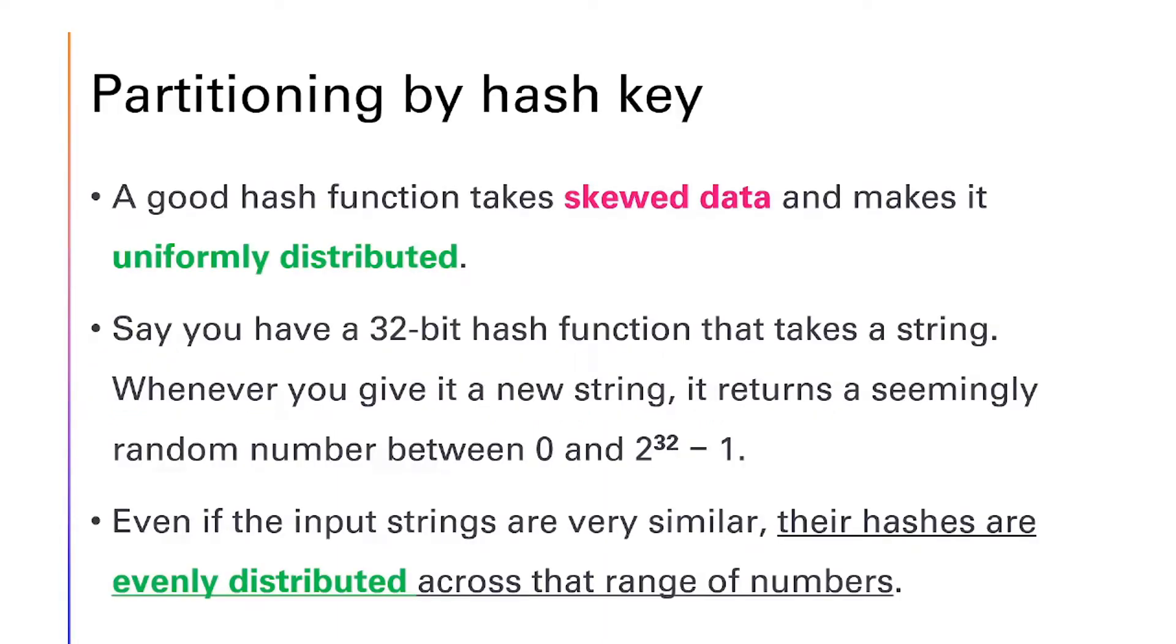Hash partitioning. A good hash function takes skewed data and makes it uniformly distributed. Say you have a 32-bit hash function that takes a string. Whenever you give it a new string, it returns a seemingly random number between 0 and 2 to the power 32 minus 1. Even if the input strings are very similar, their hashes are evenly distributed across that range of numbers.